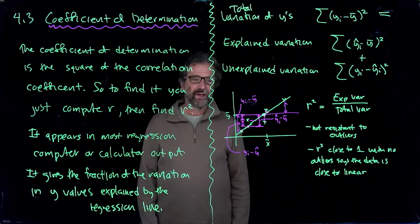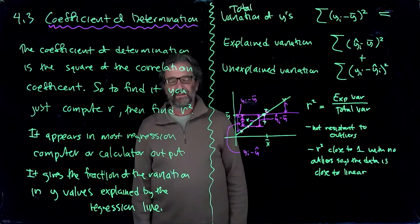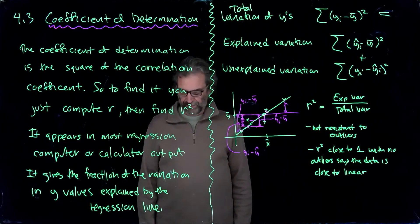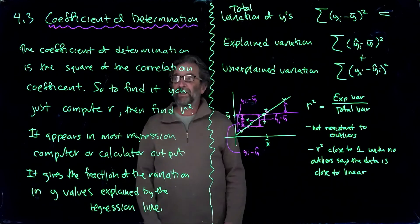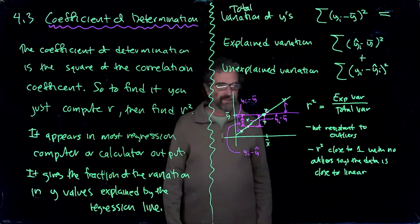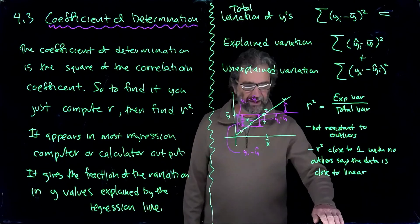And we can see that in the formula for the coefficients in the regression line because the slope is R times SY over SX. So if R is negative, the slope is negative. R is positive, the slope is positive. So that's going to get rid of chapter 4 and we're going to move on to chapter 5 and talk to you later.